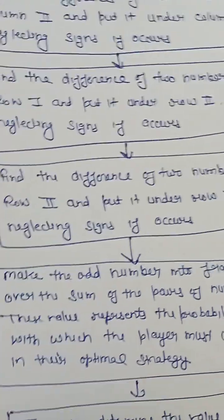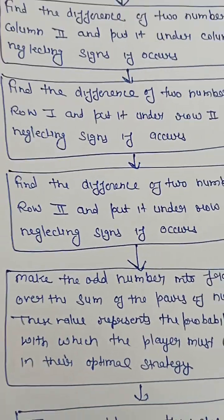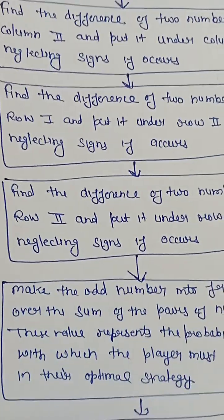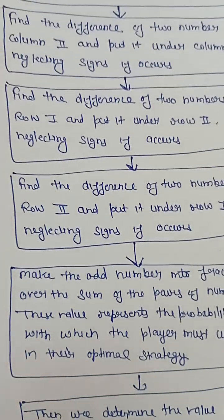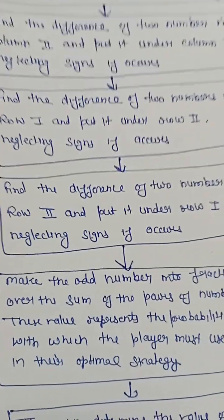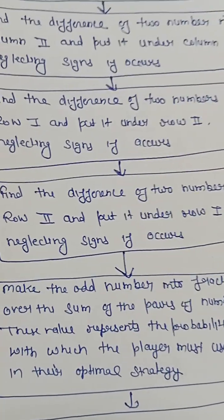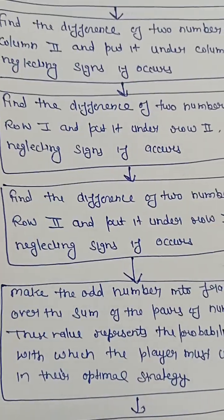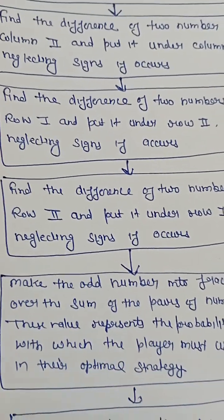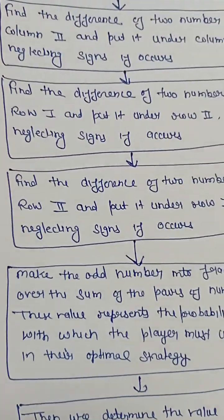Then we will determine the value of game. Since our table is already in 2x2 form, we will calculate the value of game. We will take the probability of player like P1, P2.